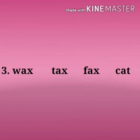Now the third one. The first word is W-A-X, wax; T-A-X, tax; F-A-X, fax; C-A-T, cat. Cat has the '-at' sound, and the rest — wax, tax, fax — end in '-ax'. So the odd one out is C-A-T, cat. Cross cat.